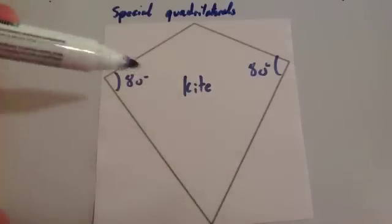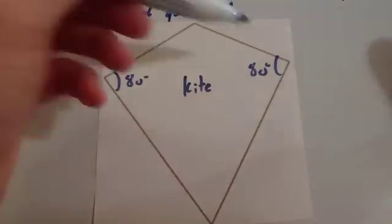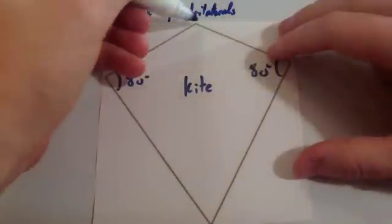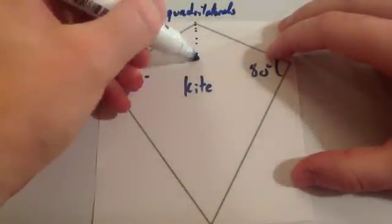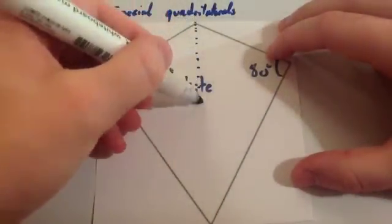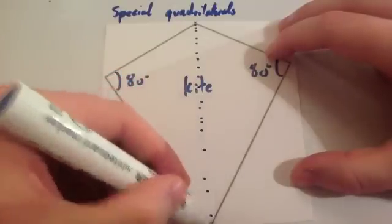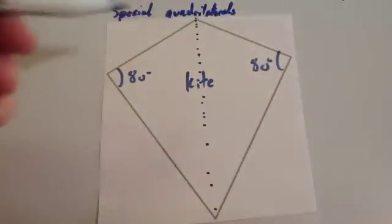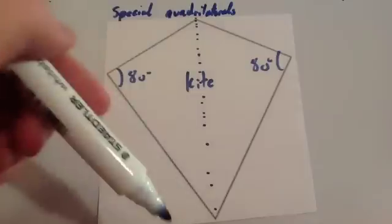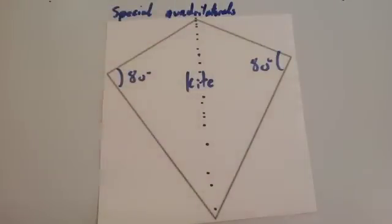In a kite, there's one pair of equal angles — the equal angles are on either side of the line of symmetry. Because a kite has a line of symmetry down the middle, the angles on either side are the same size as each other.